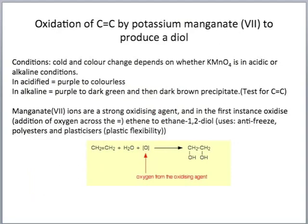Let's look at oxidation of the carbon–carbon double bond by potassium manganate to produce a diol. The condition for this reaction is that it is cold, and there will be a colour change. The colour change depends on whether the potassium manganate(VII) is in acidic or alkaline conditions. If acidified, the solution turns from purple to colourless. In alkaline conditions, the purple colour first goes to dark green and then a dark brown precipitate forms. This is sometimes used to test for the carbon–carbon double bond. We represent the oxidising agent as [O] in water.